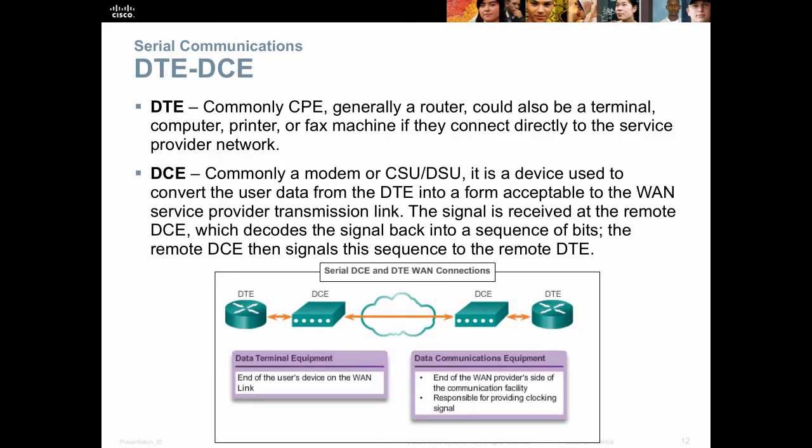Let's talk about the difference between a DTE and DCE. A DTE is sometimes called CPE — Customer Premise Equipment — typically the router. It could be a computer or server — some piece of equipment that you want to get on the WAN. It cannot connect directly to the WAN. Like your computer at home: it doesn't have the necessary port or circuits to plug directly into a cable from the cable company, and you don't have a DSL port on your PC. So you need another device to convert from what the DTE device speaks to what the WAN circuit speaks.